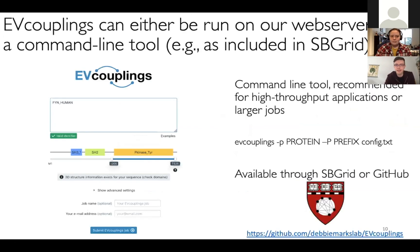To actually run EVcouplings, you have two possibilities. One is as a standalone application through SBGrid, particularly useful for predicting large numbers of proteins or automating the process. The second way is through a web application available at evcouplings.org. There is also a new beta version being released, and as part of this presentation you get early access to try it yourself.